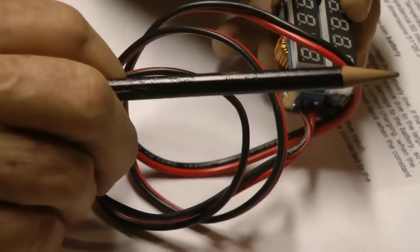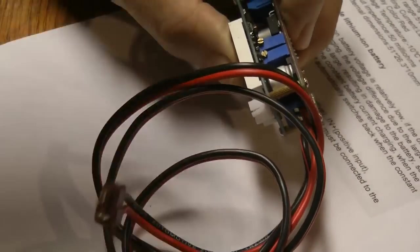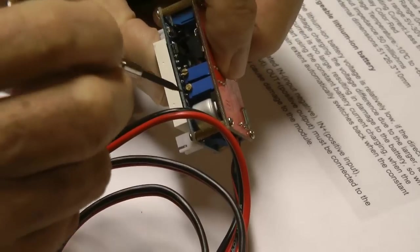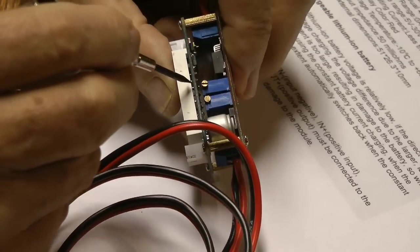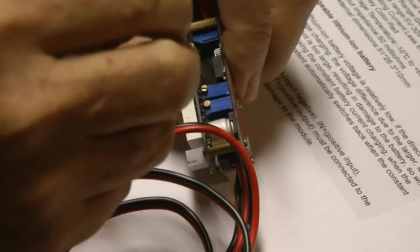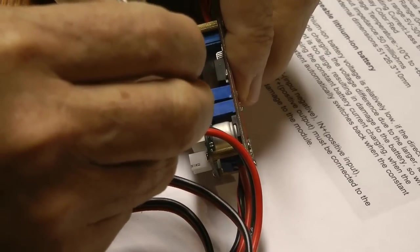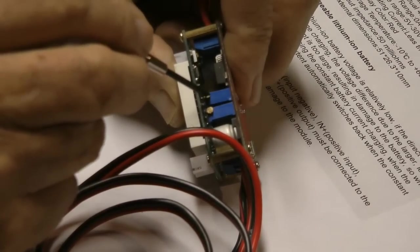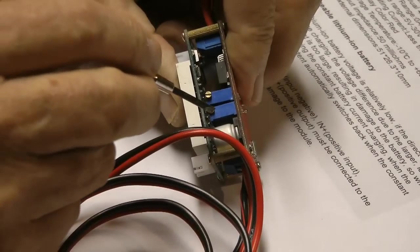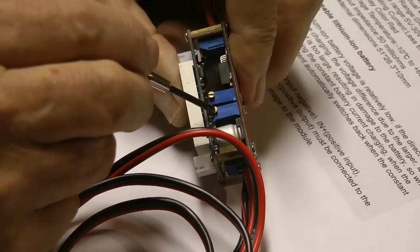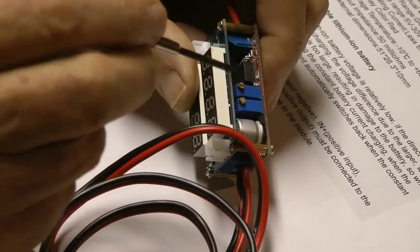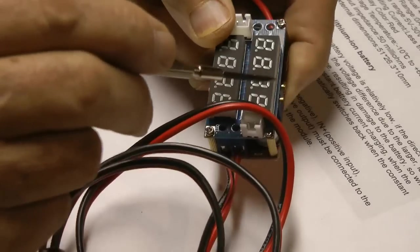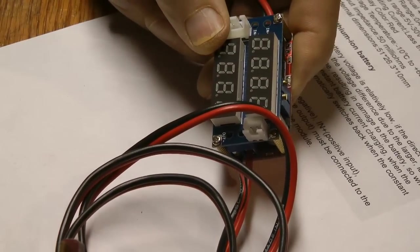On this side you've got a couple of probably 20-turn trim pots. The one here on the left is for adjusting the voltage and the one here on the right is for adjusting the current limit. There's some LEDs on the circuit and I'm going to explain what they're going to do for you in just a minute.